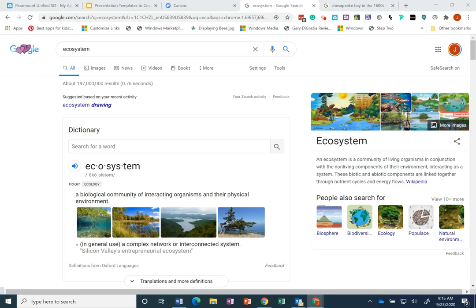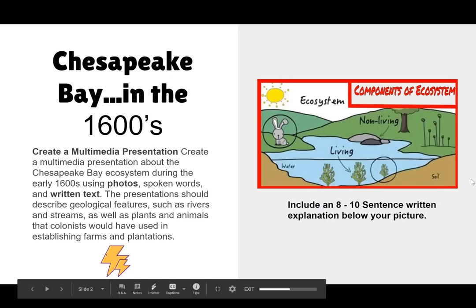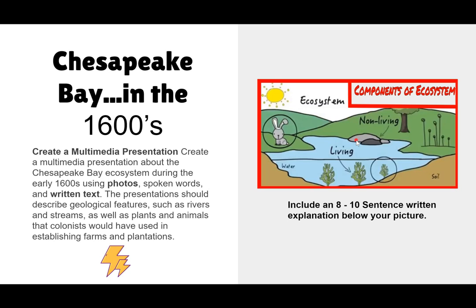If you don't know what an ecosystem is, I encourage you to look it up — spend some time on that. As you can see from the picture I attached, this can be an example of what you turn in to me, followed by an eight to ten sentence paragraph where you explain the ecosystem of Chesapeake Bay in the 1600s.